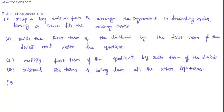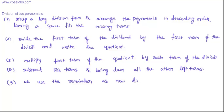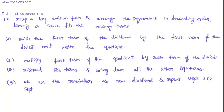The fifth step is: use the remainder as the new dividend and repeat steps 2 through 4.